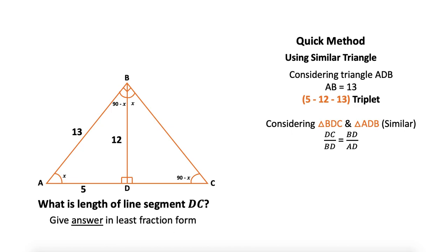Now I know all of these sides except DC. So DC = 12 × 12 ÷ 5, which is 144 ÷ 5. So we got the same answer as we got in the last method, and this is by using the similarity theorem.